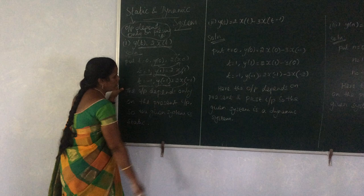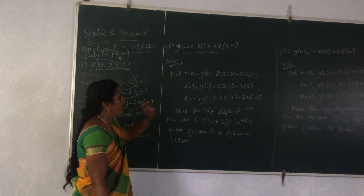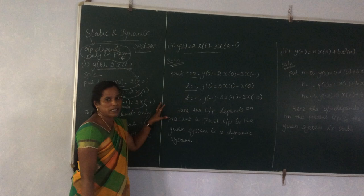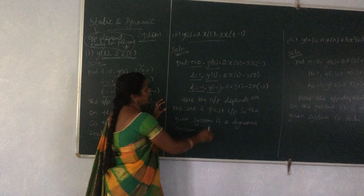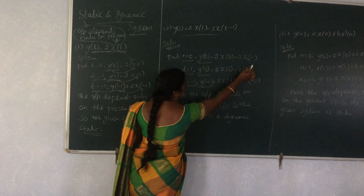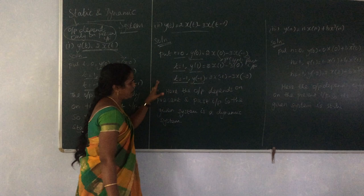The second problem is y(t) = 2x(t) - 3x(t-1). We substitute three values: t = 0, t = 1, and t = -1. For y(0) we get 2·x(0) - 3·x(-1). Here x(0) is the present input, but x(-1) is the past input. So the given system is a dynamic system.